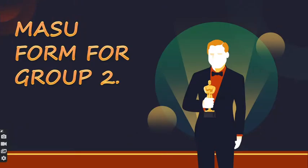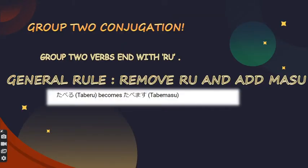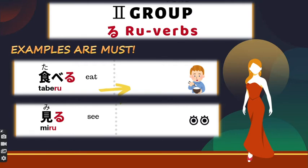Now it's time for group 2 verbs — the masu form for ru verbs. Group 2 verbs end with ru and have a sound of e or i before it. The conjugation is simple: remove ru and add masu. 'Taberu' becomes 'tabemasu,' 'miru' becomes 'mimasu.' Miru means 'to see.' I hope you understood group 2 as well.